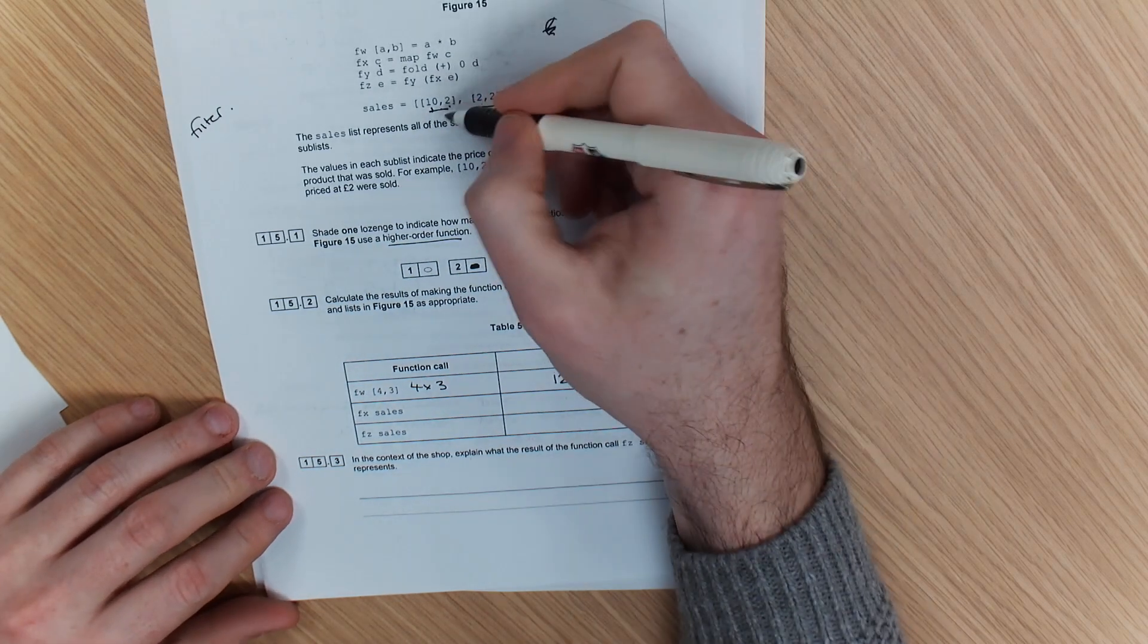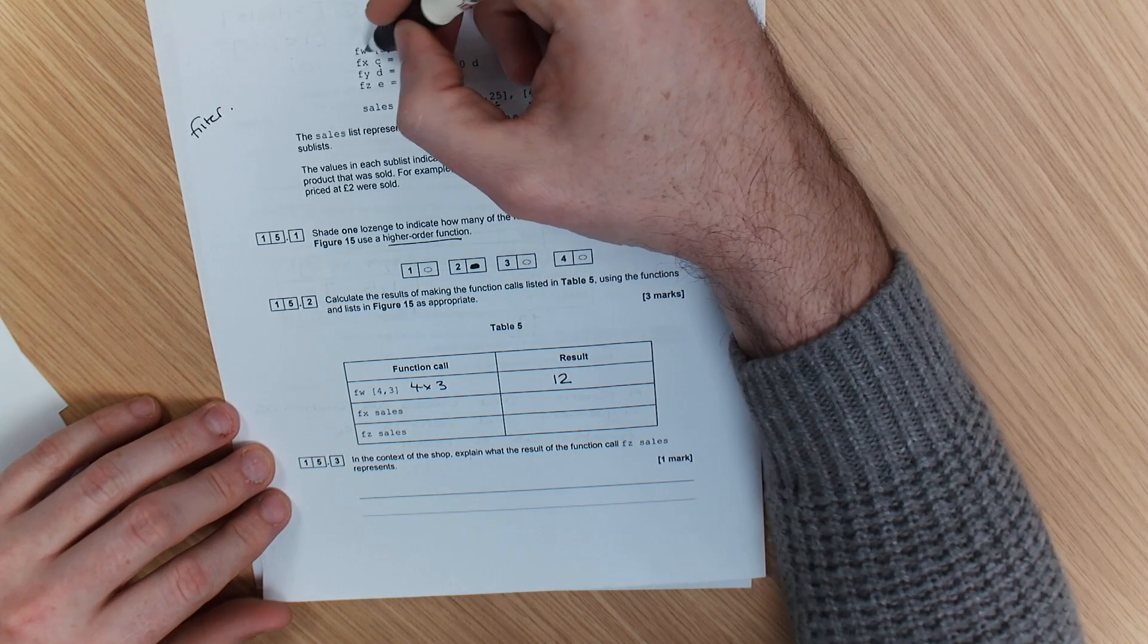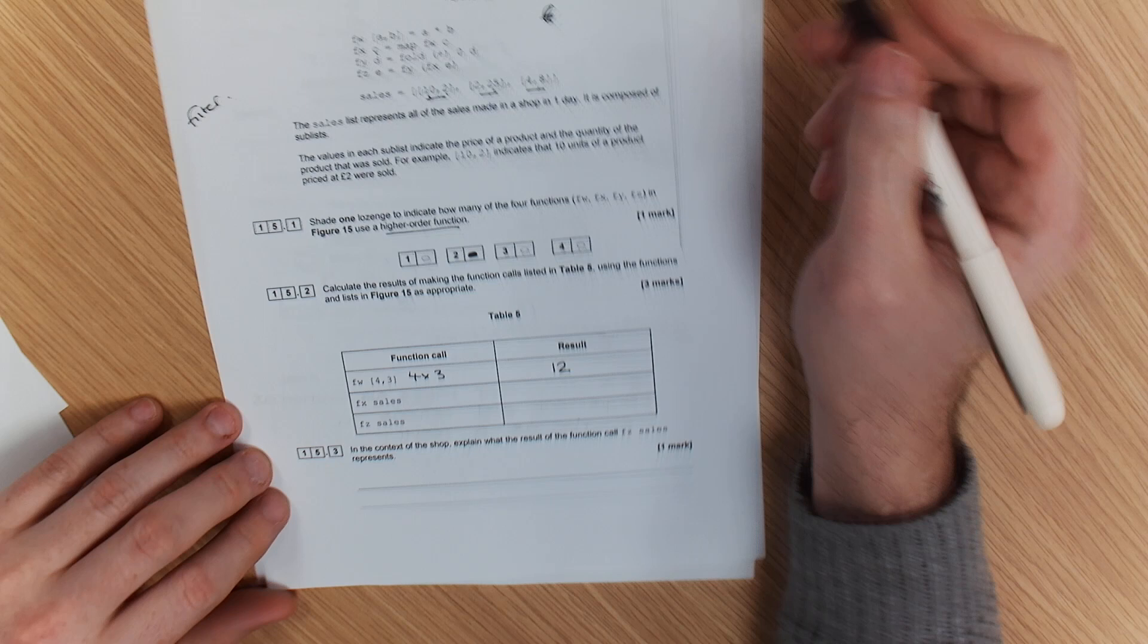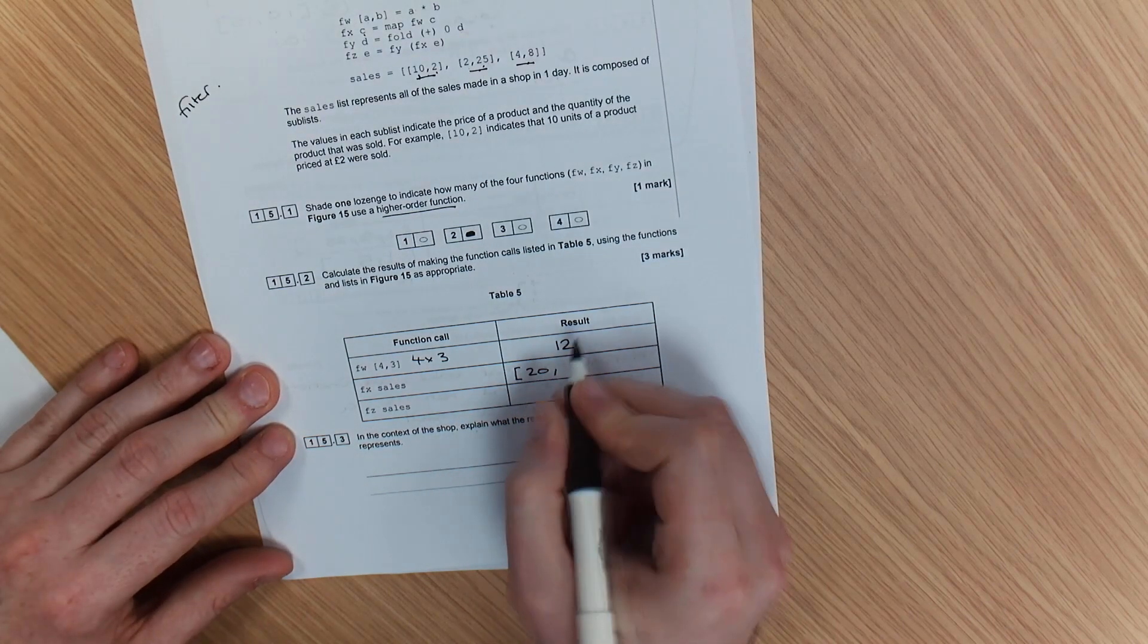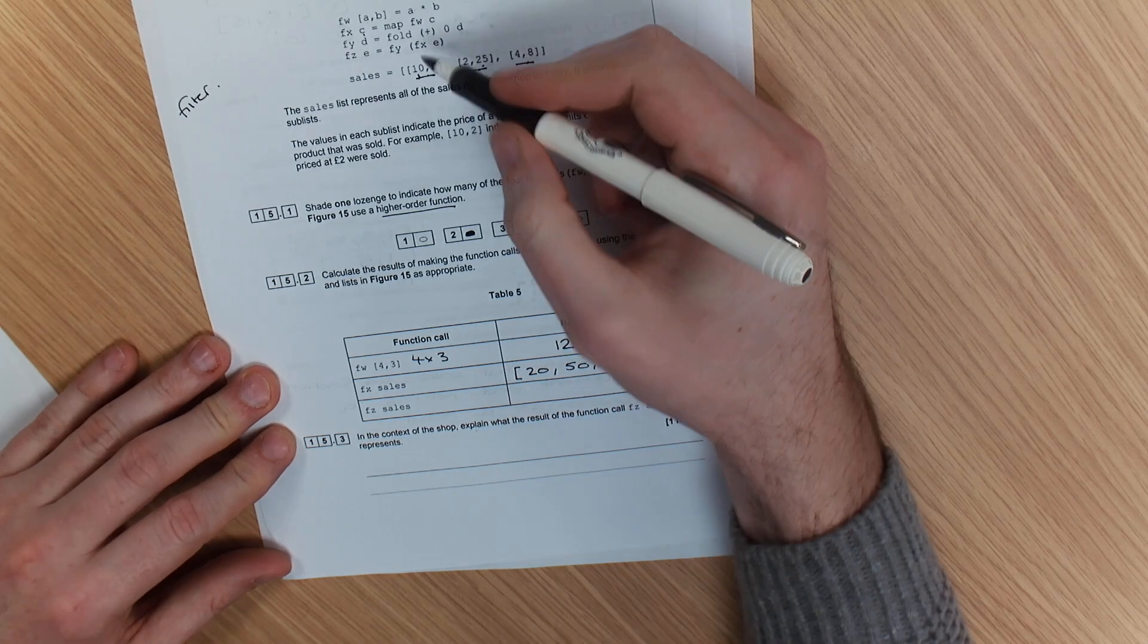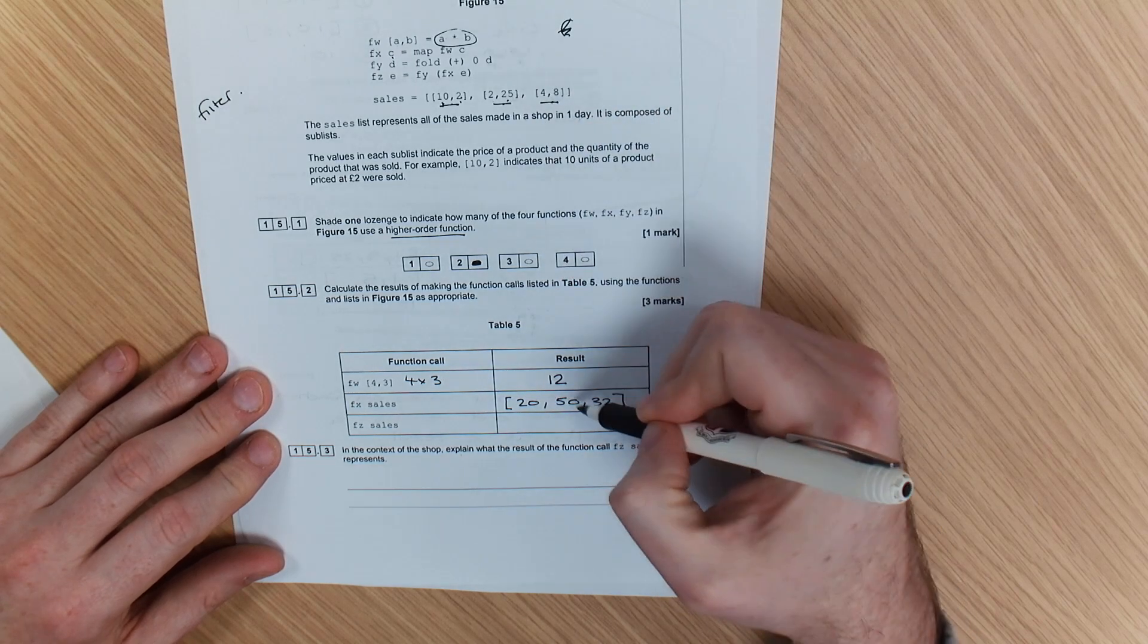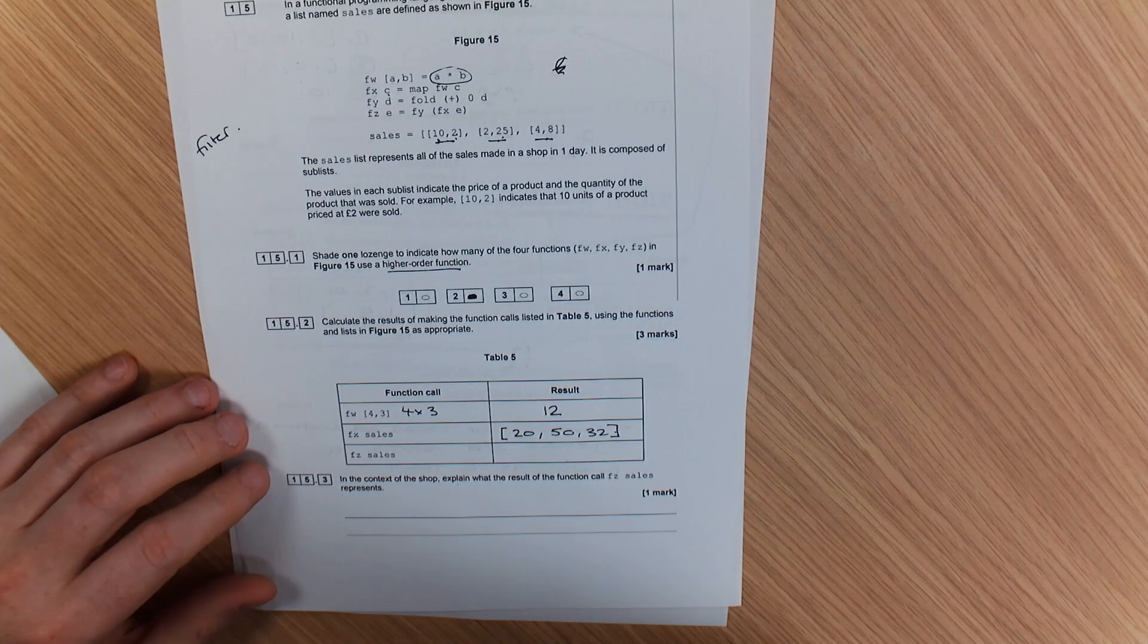So FX is mapping this function, so FW has been used on each set. So that should give you, realistically speaking, it should give you 20, 50, and 32. So how did I get to that? Because the function a times b is 10 times 2 gives you 20, 2 times 25 gives you 50, 4 times 8 is 32, and that's how I've got to my answer there.